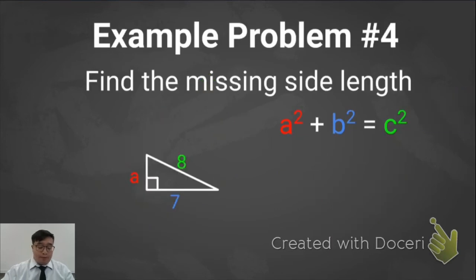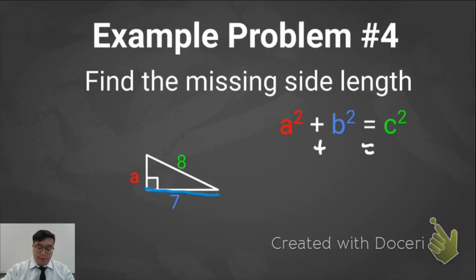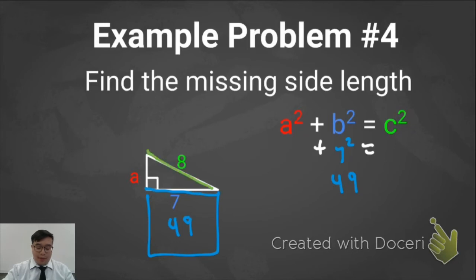Let's go over our fourth practice problem. Here, instead of having side C missing, we have side A missing. Let's start by comparing the sides. Side B has a length of 7, and if I square this side, its area is going to be 49. Side C has a length of 8, and 8 times 8, or 8 squared, is going to be 64.